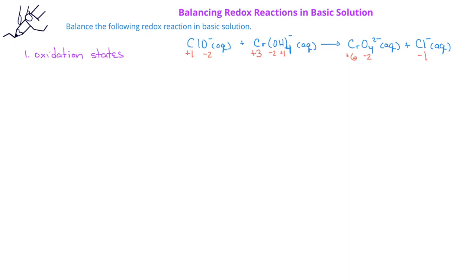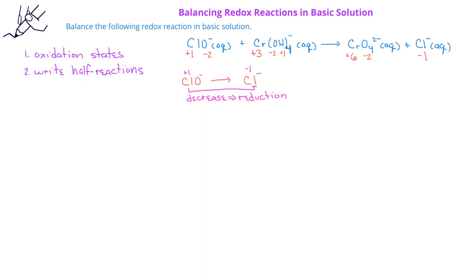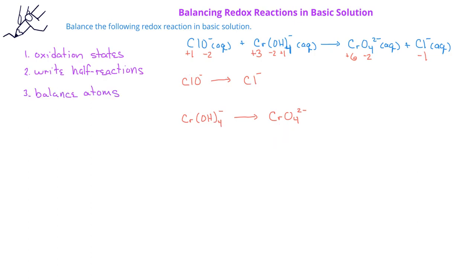We can now break the redox reaction into its two half reactions. In one half reaction, we'll have ClO⁻ on the reactant side and Cl⁻ on the product side. This is the reduction half reaction because Cl is changing from plus 1 to minus 1, decreasing its oxidation state. The other half reaction has Cr(OH)₄⁻ going to CrO₄²⁻, where chromium changes from plus 3 to plus 6 — an increase indicating oxidation.